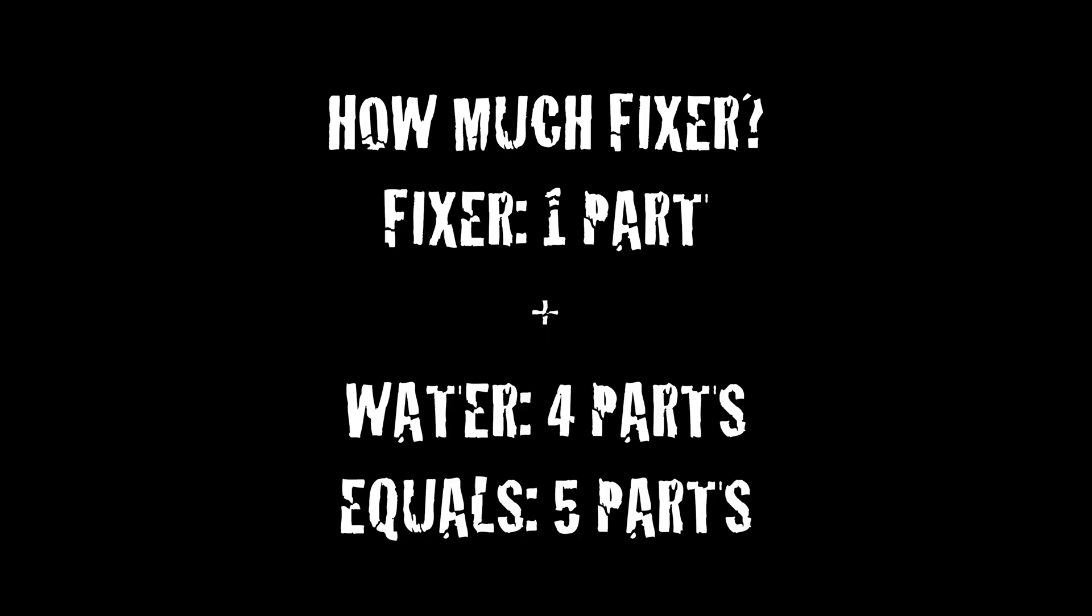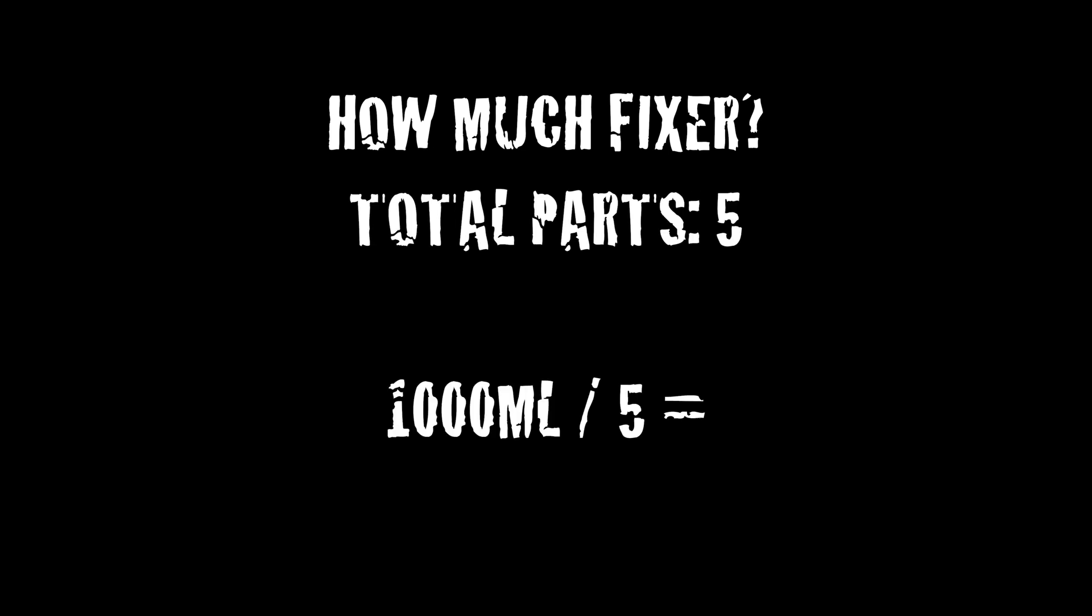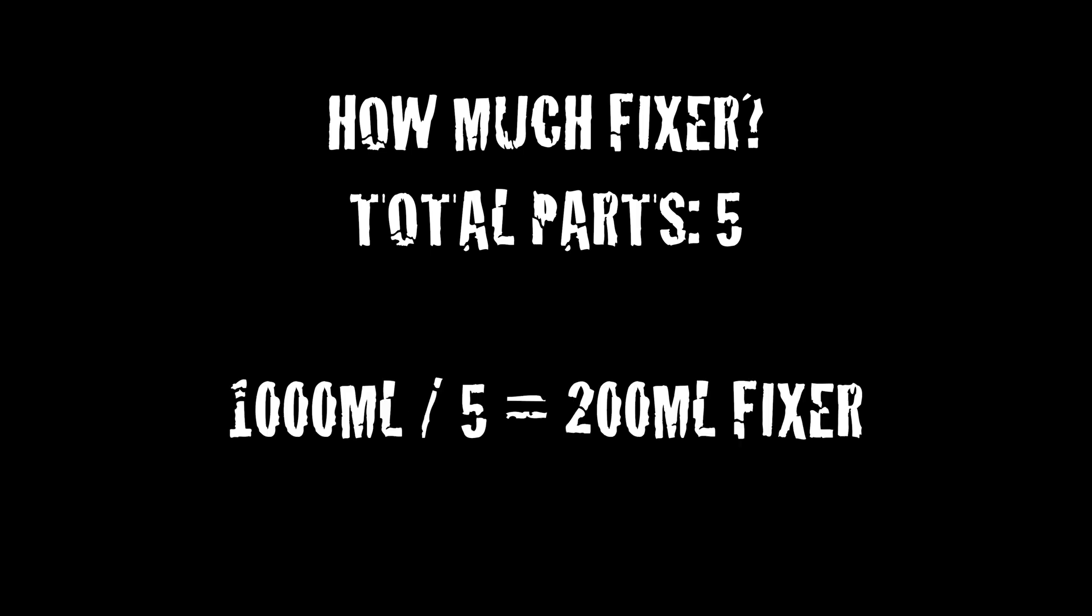We'll be mixing a total volume of 1,000 milliliters of working solution. To calculate how much concentrate we'll need, simply add the total number of parts: one part concentrate and four parts water, which equals five parts. Use that number, five, and divide it by the volume in milliliters, which gives us 200 milliliters of concentrate.